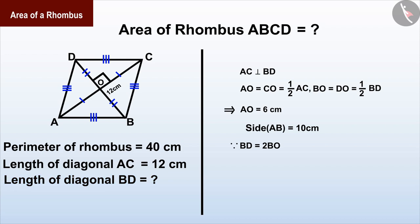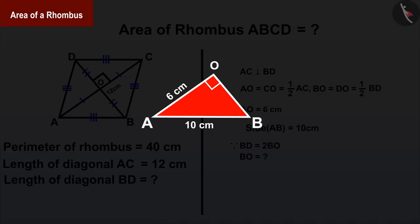Now can you tell how to find the value of BO? As we can see, the length of AO and AB in triangle AOB are known, and the value of angle AOB is 90 degrees. Hence Pythagoras theorem can be used in triangle AOB.